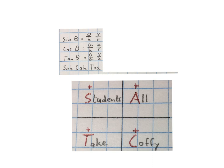I assume you know your CAST diagram. In the first quadrant we have A, S, T, C. The rhyme is all students take coffee.